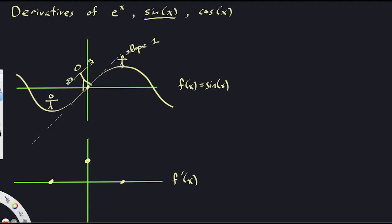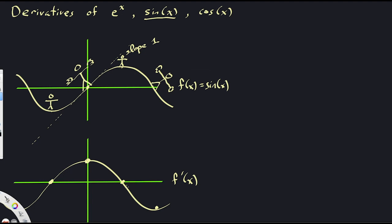Over here it looks a lot like it's going downhill instead of uphill. You might guess this is some kind of triangular thing, but in fact it's smoother than that. It looks very much like the sine wave itself — it gently goes up, reaches a peak, goes back down, and so on. And in fact this graph might look familiar. It looks a lot like a sine wave, but horizontally shifted. This is the cosine function. The derivative of the sine function is the cosine function.